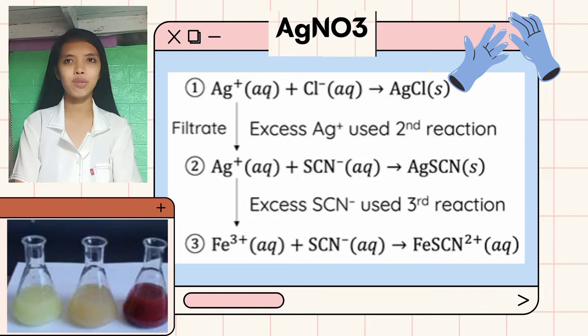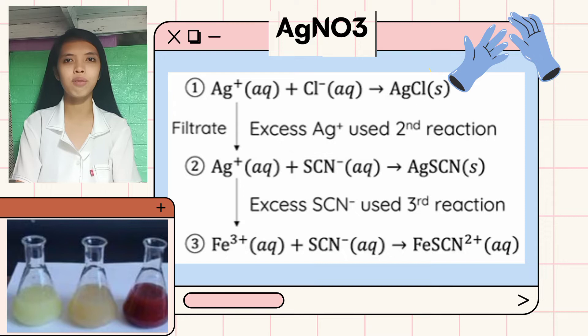Some amount of ferric ion solution is also added to the conical flask as the indicator of this titration. When thiocyanate ions are added to the excess silver ions from the previous reaction, they produce a white precipitate — silver thiocyanate.